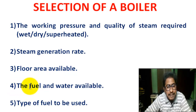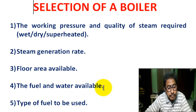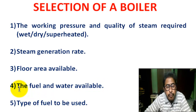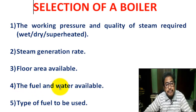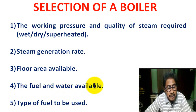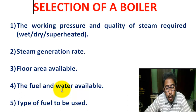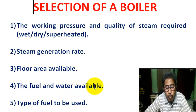Number 4: the fuel and water available. Fuel means availability of oil, gas, wood, coal, or any others. Water available means quality of water available. Treatment of water is not so necessary for a fire tube boiler, but for a water tube boiler, treatment of water is necessary.